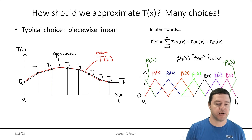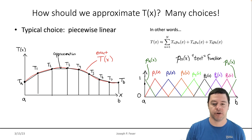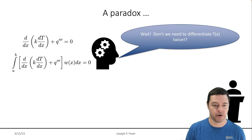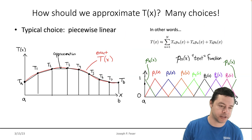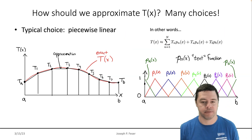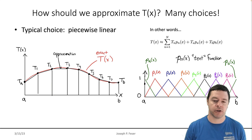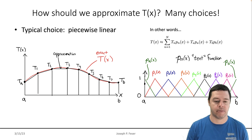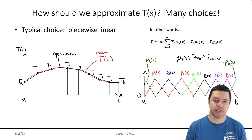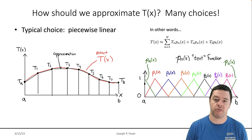That is typically how the finite element method works if you're using first order polynomials. There are scenarios in which you can construct these things to be parabolas — I'll talk about that a little bit later — but the most typical choice is a piecewise linear polynomial as our approximation for T of N.